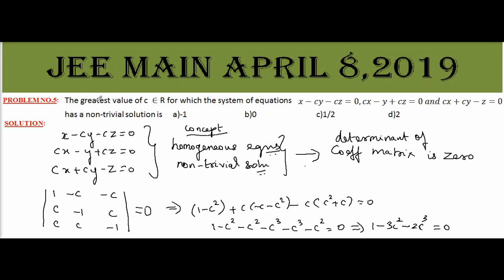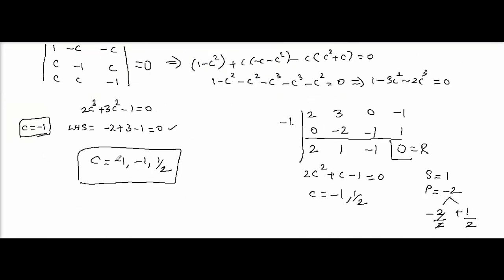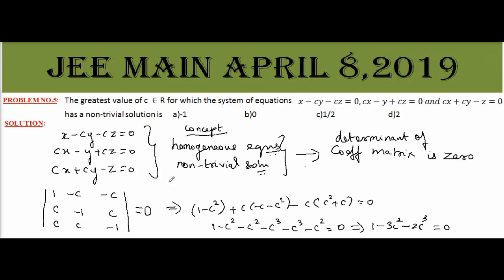So the question is find the greatest value of c. In the 3 values, greatest value c equal to 1 by 2. Therefore the right option is option c, 1 by 2.